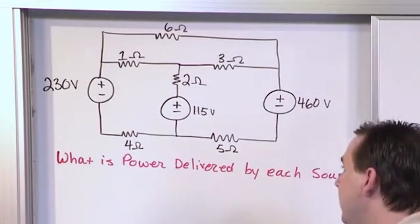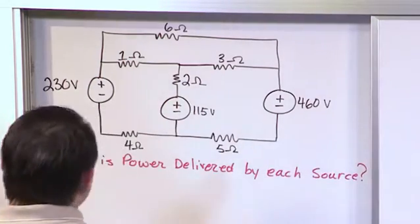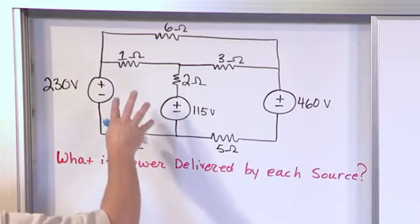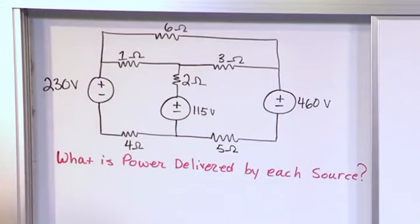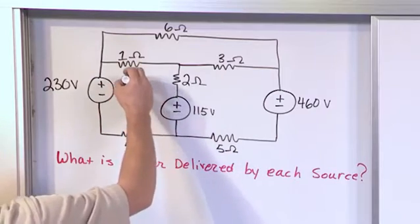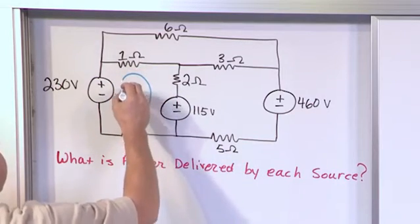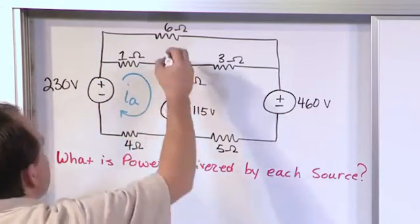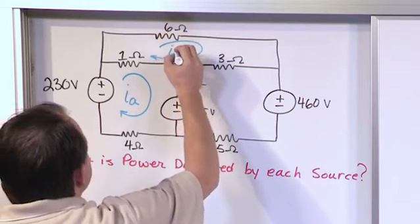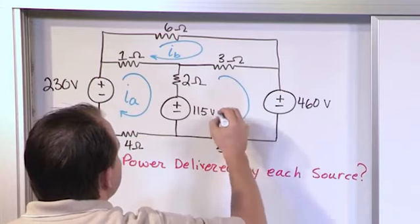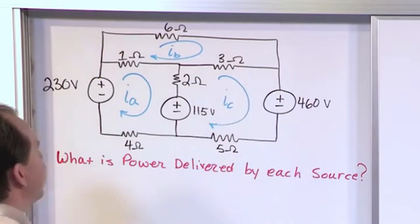The first step of the recipe is to identify your meshes. Well, this almost looks like the last problem. So we have a mesh here, a mesh here, and a mesh here, and so those are going to be our meshes. So you need to go and write your mesh currents here. So this is mesh current I sub A. I like to choose the top one as I sub B, but it really doesn't matter, and then this one is I sub C.